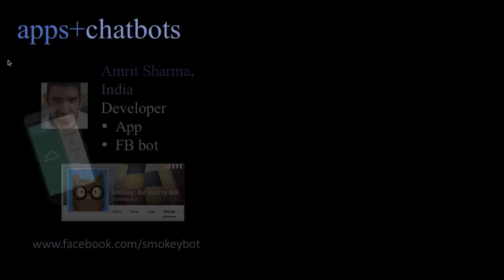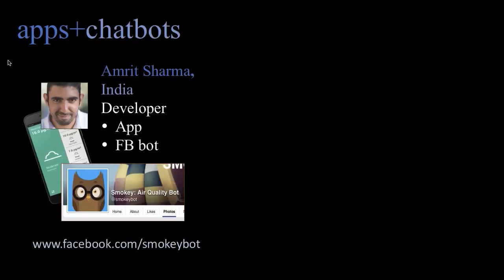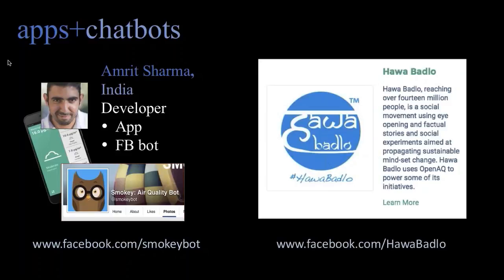For apps and chatbots: the first was from a software developer in Delhi, Amrit Sharma, who made a Facebook chatbot. You can say you live in such-and-such city anywhere around the world, and it gives you back air quality information — and also gives guidance on what you can do in your community to help mitigate that pollution. Another group we found out about that accesses our system is Hawa Badlo — an awareness campaign for air pollution that reaches over 14 million people in India — and they've also built a chatbot with our system.